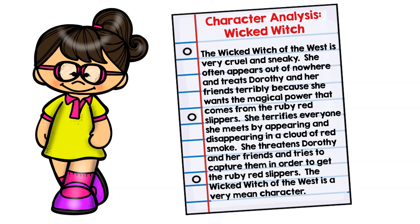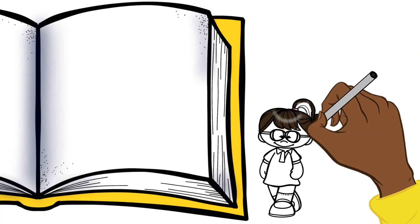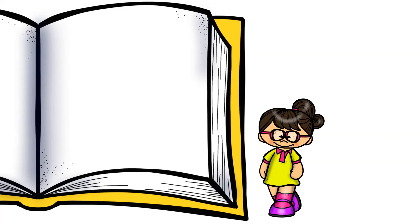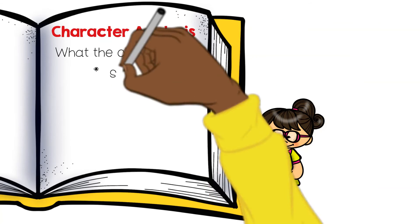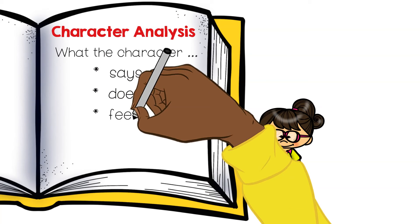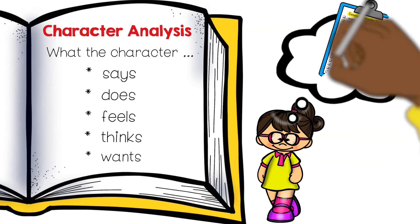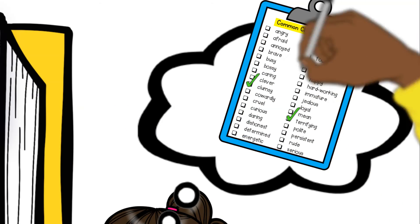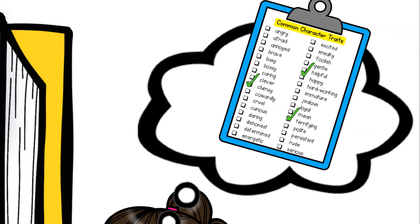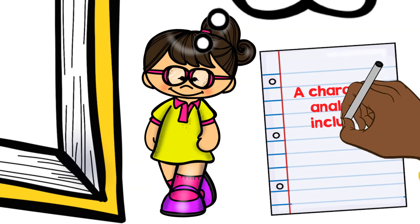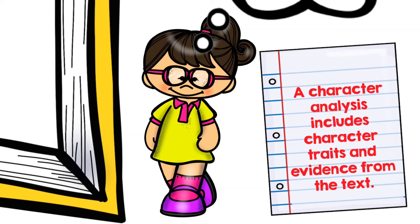Pretty good analysis, don't you think? Let's review. When you want to really get to know a character, you can do a character analysis. You study what the character says and does, how they feel and think, and identify what they want. Then you think of character traits that best describe the character based on your study of them. When you do a character analysis, you want to include those character traits as well as evidence from the text to support each trait in your analysis.